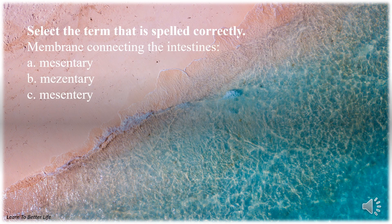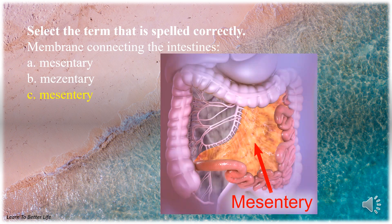Select the term that is spelled correctly. Membrane connecting the intestines. A. Mesentery. B. Mesentery. C. Mesentery. The answer is C. Mesentery.